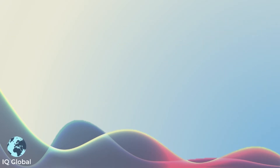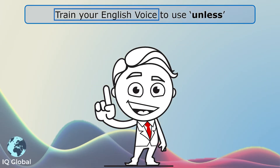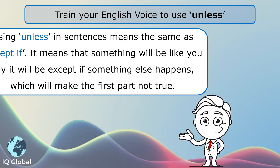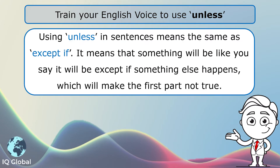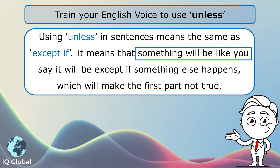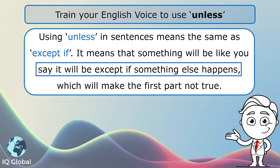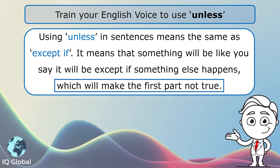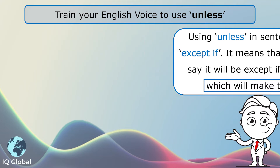Hello, today we are going to train your English voice to use 'unless'. Using 'unless' in sentences means the same as 'except if'. It means that something will be as you say it will be, except if something else happens which will make the first part not true.